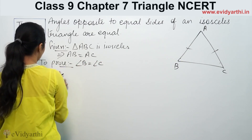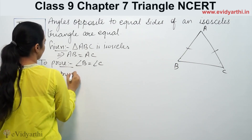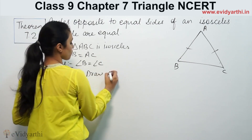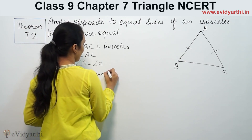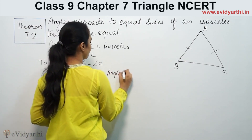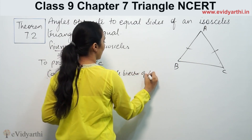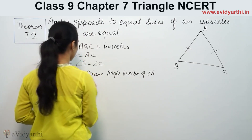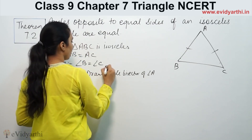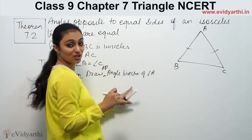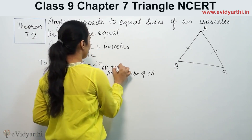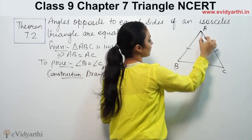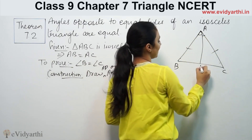Let's do the construction first. We will draw the angle bisector of angle A. So we draw AD, the angle bisector of angle A, bisecting it into two equal halves.